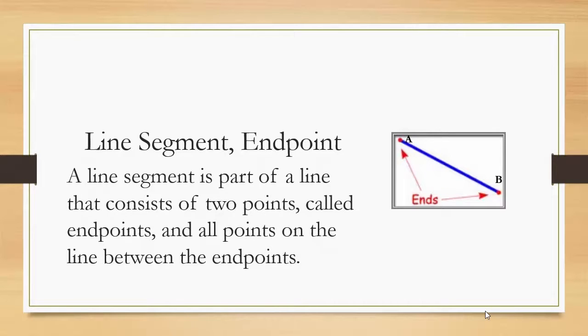Line segment endpoint. A line segment is a part of a line that consists of two points called endpoints and all points on the line between the endpoints. This is really important to know. There are points within the line, not just the endpoints. So you could have a point over here, you can have a point over here, you can have a point over here, you can have a point over here. The notation used to represent line segments is the two endpoints and then a line right above it.